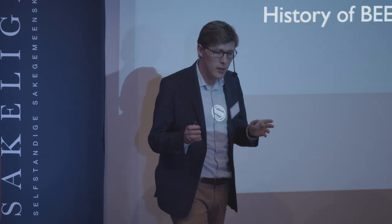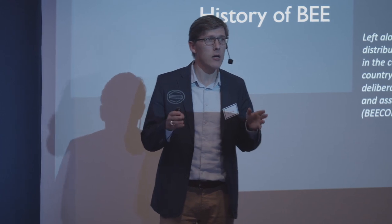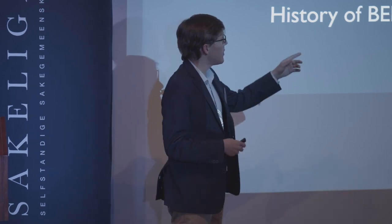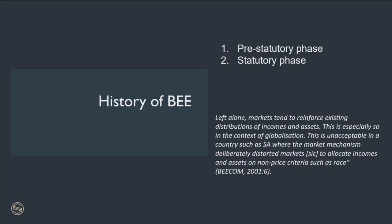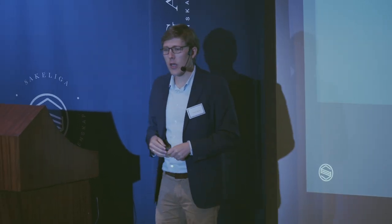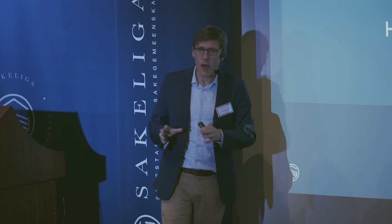BEE, as we know it today, is a shorthand for Black Economic Empowerment, or if you want to use the triple B double E, it's Broad-Based Black Economic Empowerment. It has a pre-statutory phase and a statutory phase. In the early 90s, for example, companies like Sanlam and Momentum started doing transactions out of their own volition — basically transactions where they distributed ownership and tried to get new shareholders on board. There's a business rationale for that depending on your business strategy.